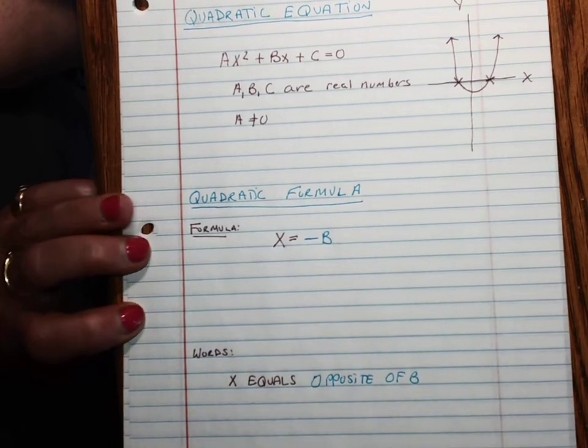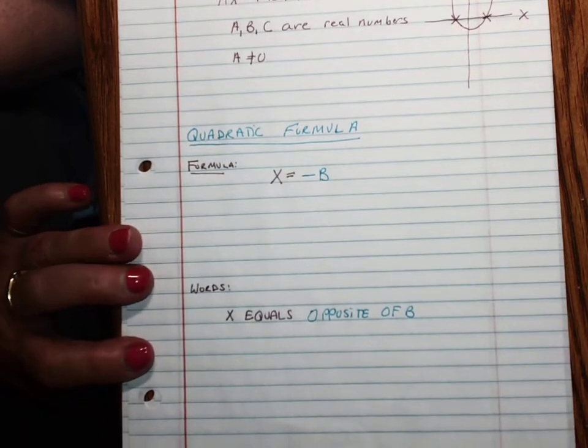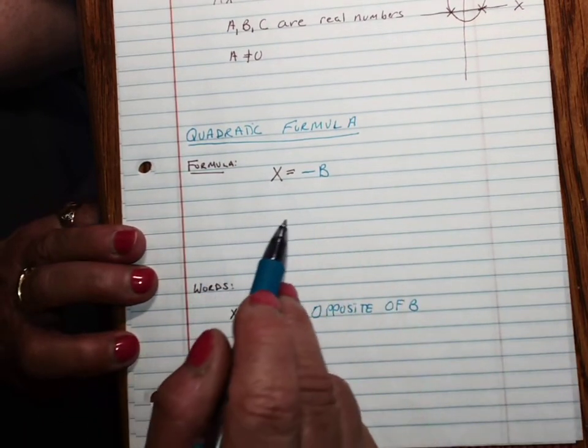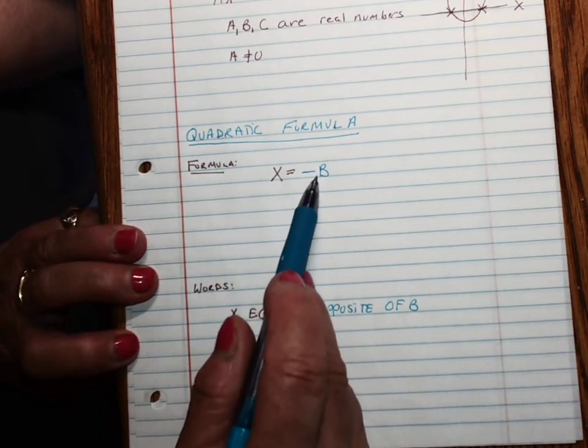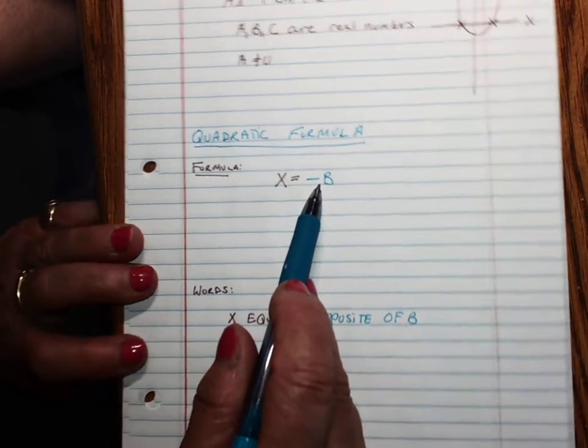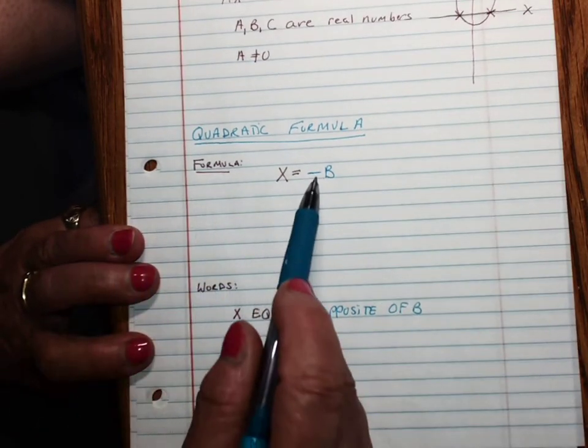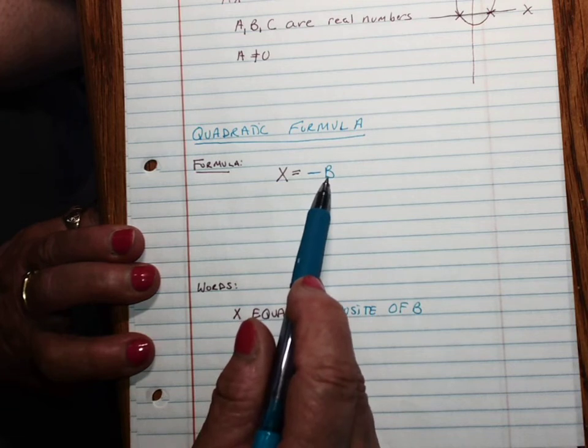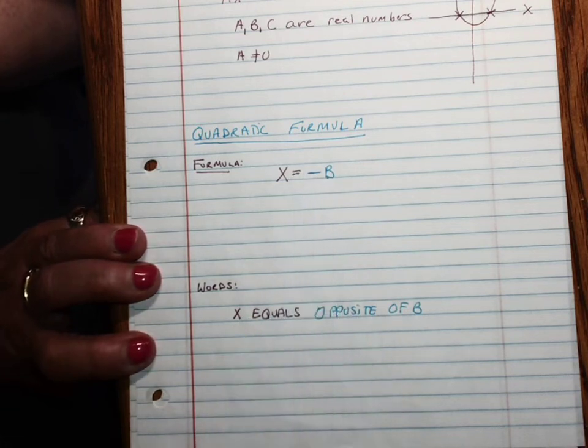Most videos that you watch about this are going to say negative b. But be careful, it's not that the number is negative, you're taking the opposite sign. So if the number is 2, it becomes negative 2, and if it's negative 2, it becomes 2.